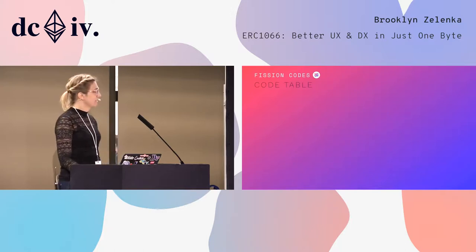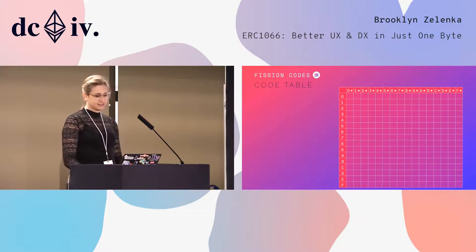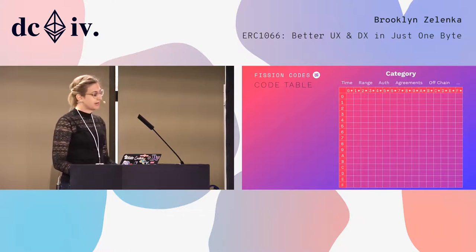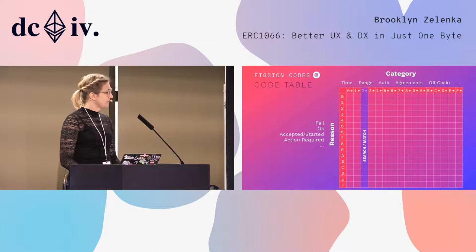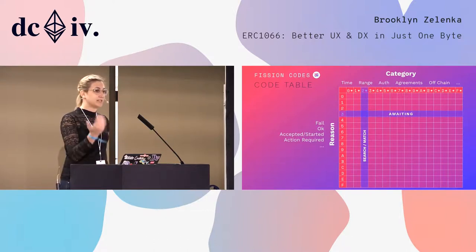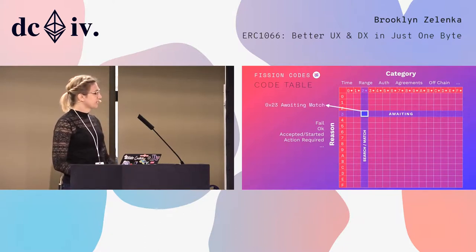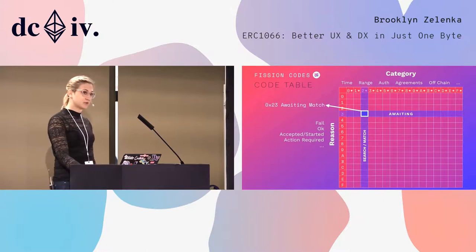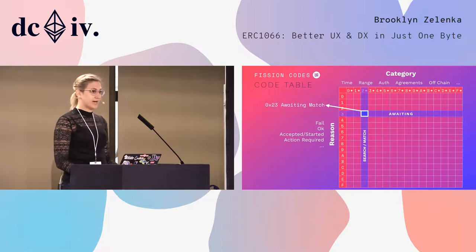The code table, if you think of it as a two-dimensional grid: the columns are categories and the rows are reasons. It makes it very easy to look up a code you're looking for or to decompose a code you've received. So in this case, we're waiting on something with search or matching logic — say in a DEX you're waiting to be matched in the order book — that's code 2,3: awaiting match.